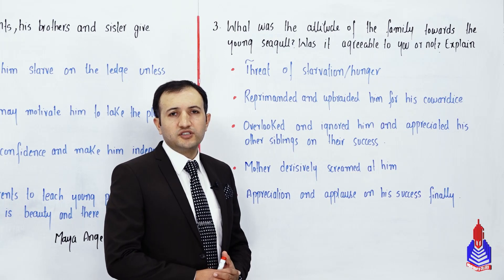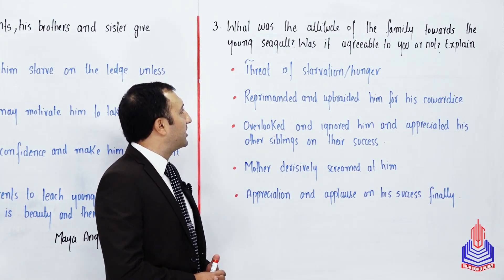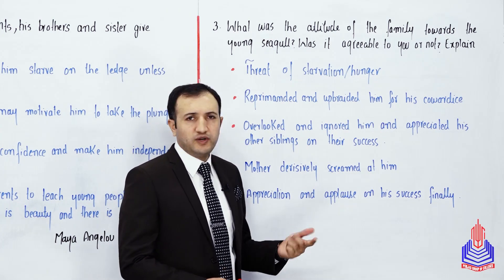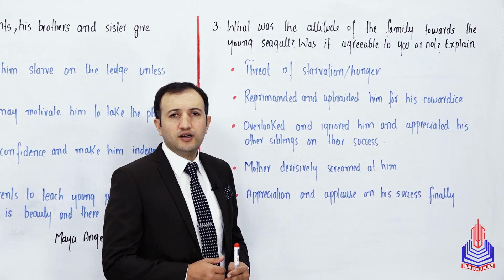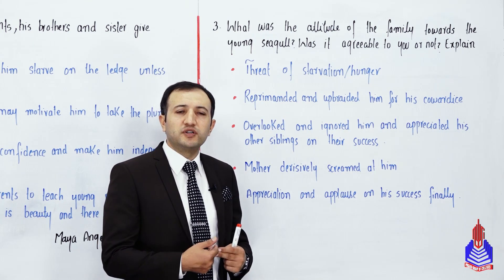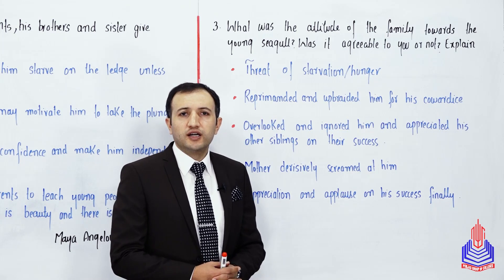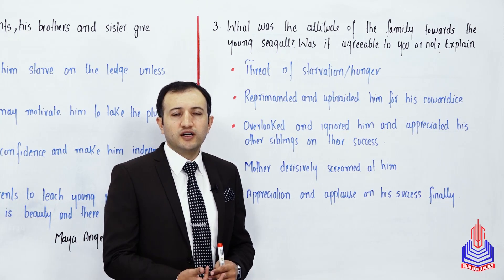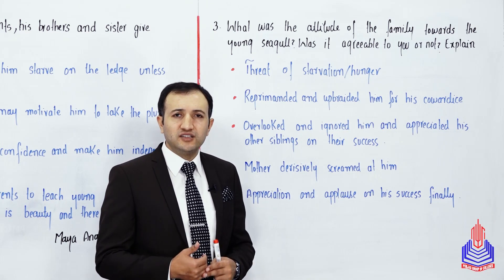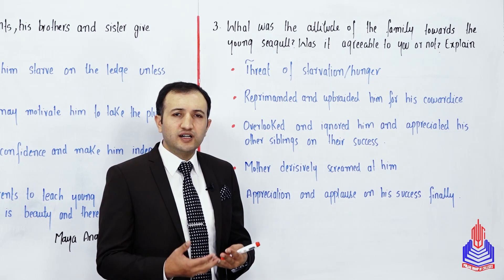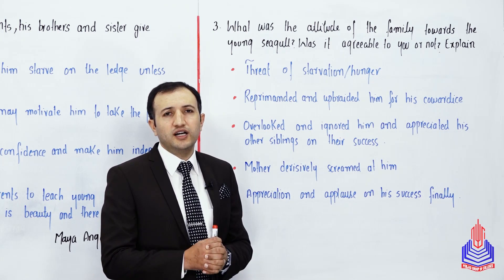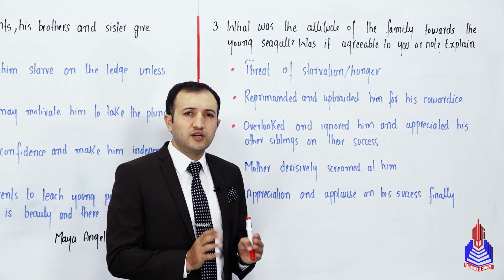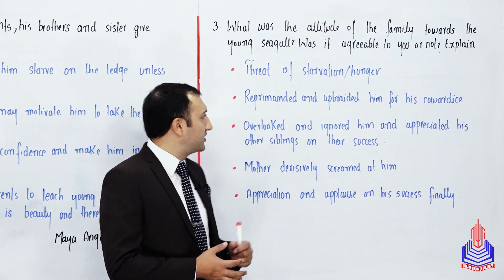Question number 3: what was the attitude of the family towards the young seagull — was it agreeable to you or not? Explain. This is an extending question — your personal opinion is being asked. The attitude the parents adopted to force and motivate the young seagull to fly from the ledge — was it justified or not? You have to explain.